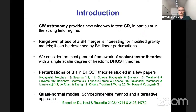I'm going to discuss the traditional approach to quasi-normal modes, which is to use a Schrödinger-like equation as done usually in GR, but I'm also going to discuss an alternative approach which can be used when it's impossible or difficult to find a Schrödinger-like formulation. This work is based on two recent papers with Karim Noui and Hugo Roussi, who is a PhD student.